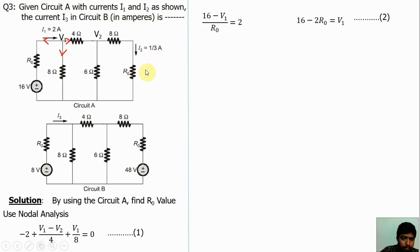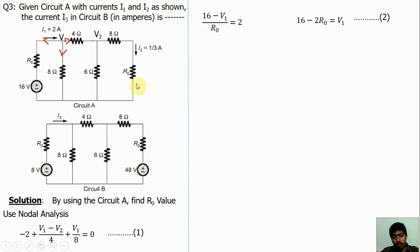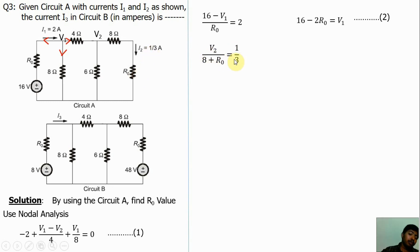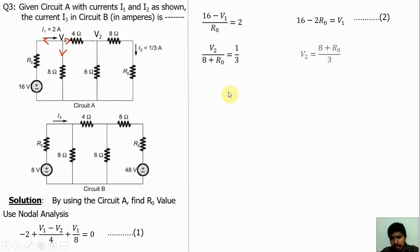Now use this branch. Here I1/2 is given. 8 ohm and R0 are in series, so the voltage is V2 and resistance is 8 plus R0 and current is 1/3. By Ohm's law: V2 divided by (8 plus R0) equals 1/3. Simplifying, we get V2 equals (8 plus R0)/3. This is equation 3.